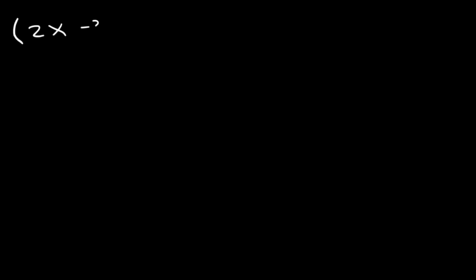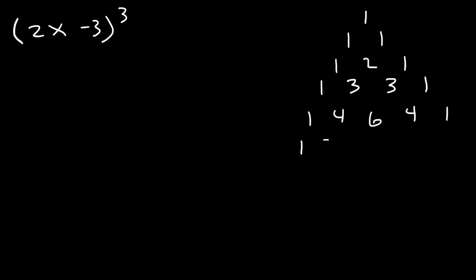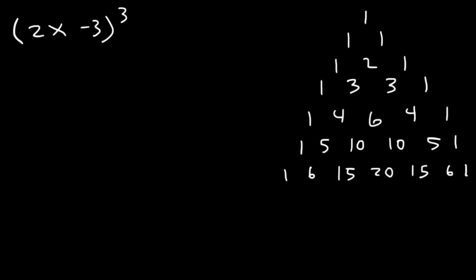Now let's confirm the answer using the binomial theorem. First, let's make Pascal's triangle. We're going to start with a 1, then two 1s. 1 plus 1 is 2. 1 plus 2 is 3. 1 plus 3 is 4. 3 plus 3 is 6. Then 1 plus 4 is 5. 10 plus 5 is 15. 10 plus 10 is 20. The exponent is 3, so the second number in that row should be 3 — we need to use the row 1, 3, 3, 1. The final answer will contain 4 terms, and we're going to use those values as coefficients.